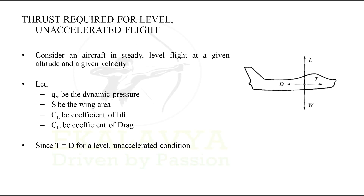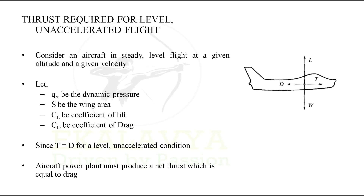Since thrust should be equal to drag and weight should be equal to lift for a level unaccelerated condition — as derived in the previous video, Video Lecture 4 — the aircraft power plant must produce a net thrust equal to drag in order to maintain level unaccelerated flight.